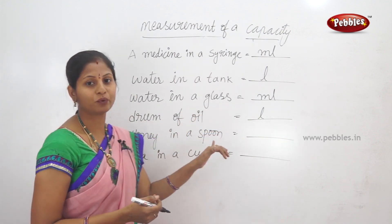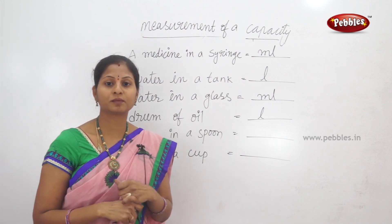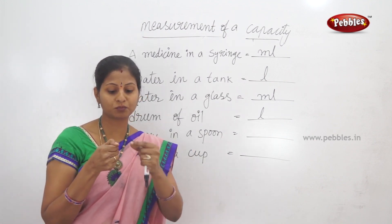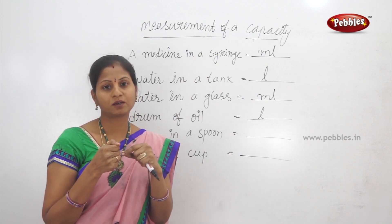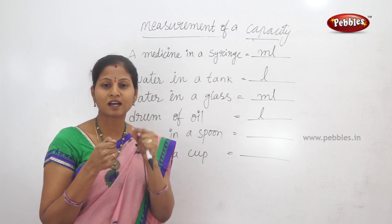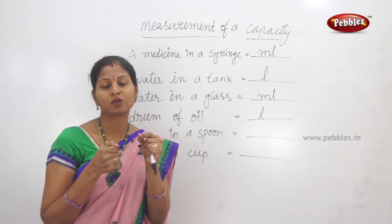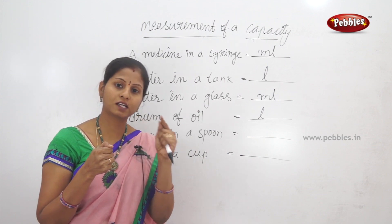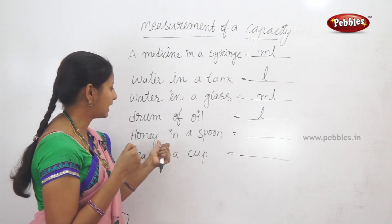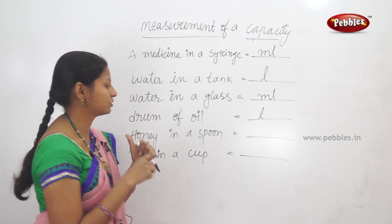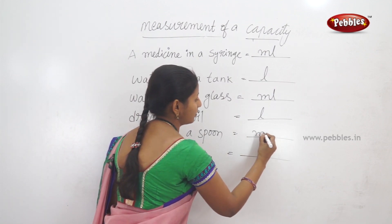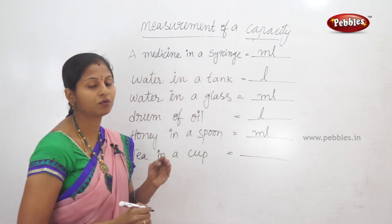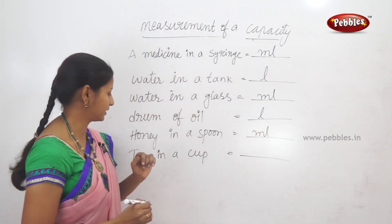Next, honey is measured in a spoon. What is honey? Spoon is honey. So it is very less quantity, so we will measure it in milliliters. Honey by spoon is 2 ml, 3 ml, 4 ml.